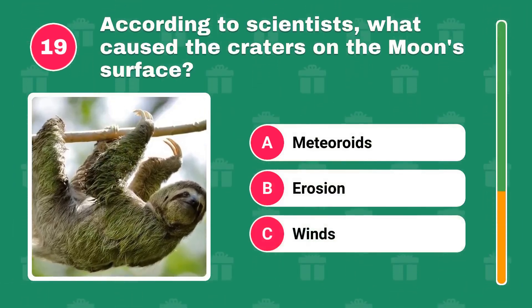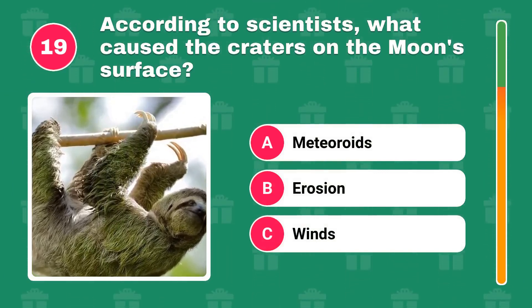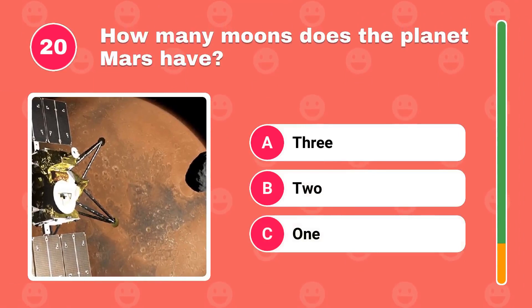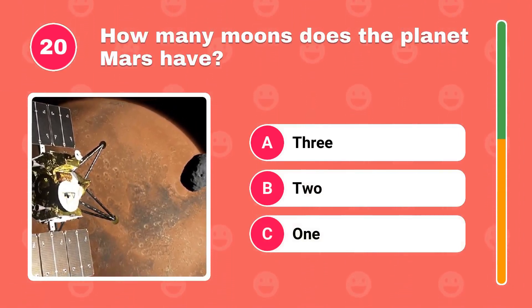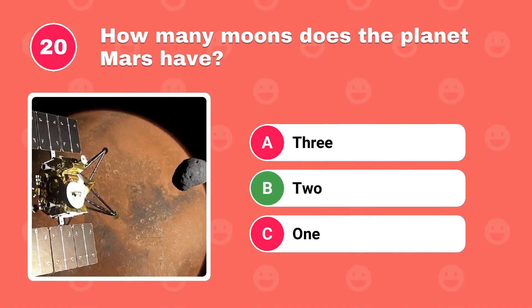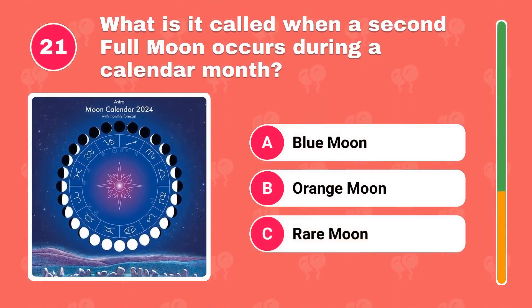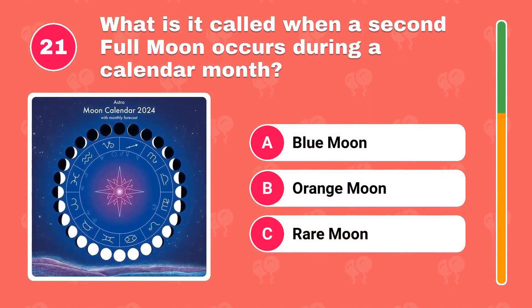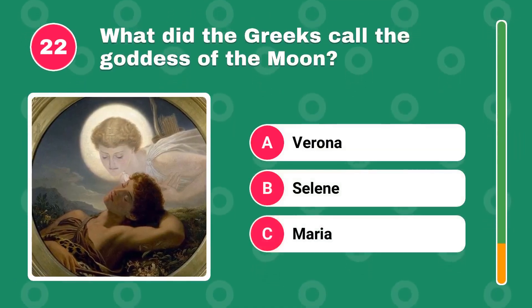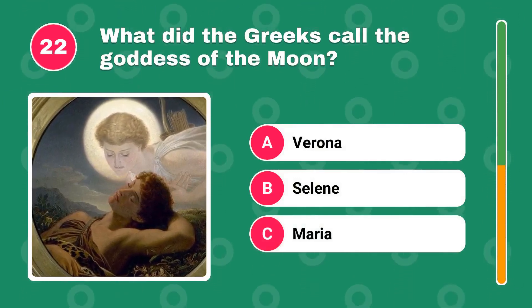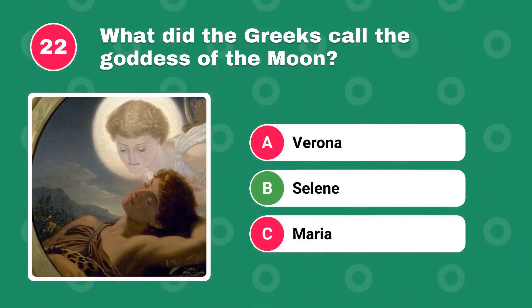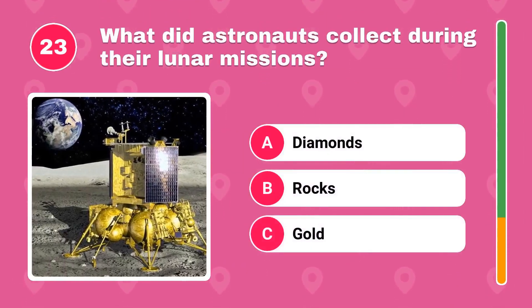According to scientists, what caused the craters on the moon's surface? How many moons does the planet Mars have? What is it called when a second full moon occurs during a calendar month? What did the Greeks call the goddess of the moon? What did astronauts collect during their lunar missions?